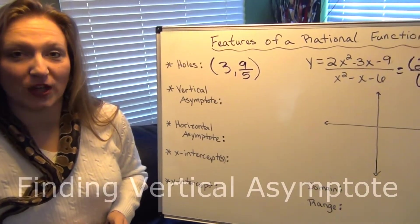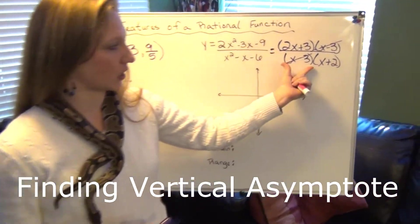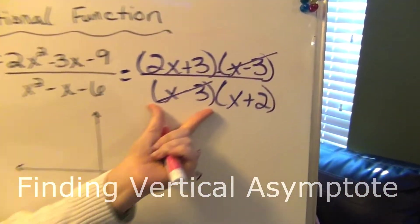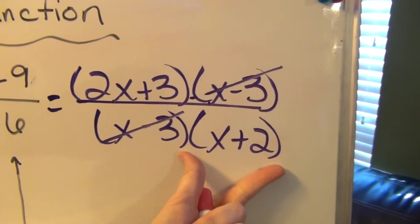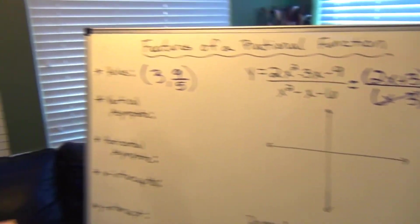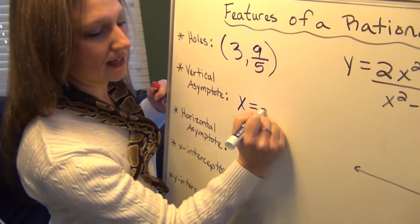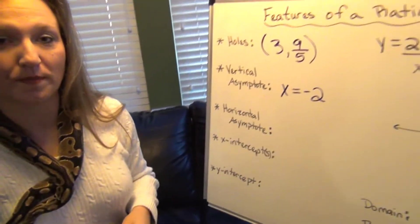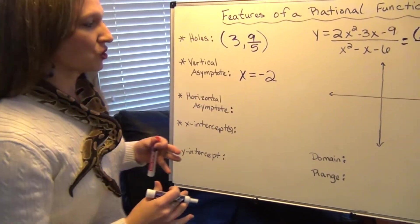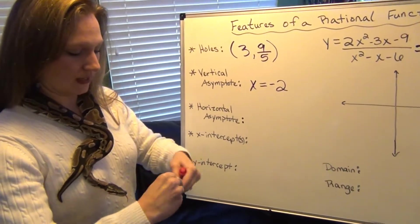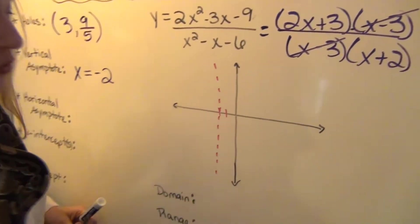All right, now let's talk about how to find the vertical asymptote. The vertical asymptote only depends on what's left in the denominator. We do not care about the hole that was canceled out. So only thing that's left in the denominator is x plus 2. We're going to set that equal to 0. And that will be negative 2, which tells us that we have a vertical asymptote at x equals negative 2. Because that's what made the denominator undefined.